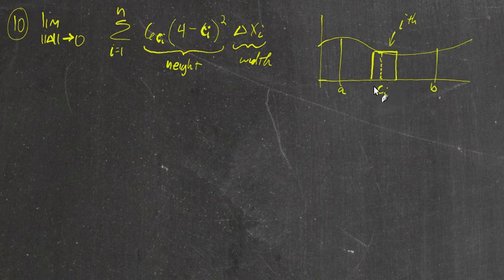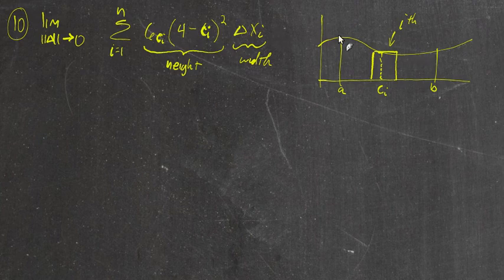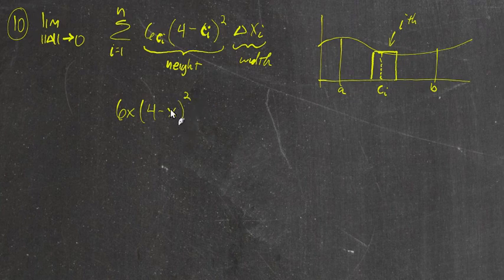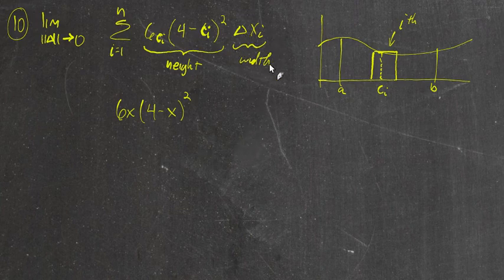You take a value somewhere between the left and right side of this sub-interval and evaluate 6 times that, times four minus that c value squared. So the function here is f(x) = 6x(4 − x²). That defines the height of the rectangle at some x, and we're finding the definite integral of this function.